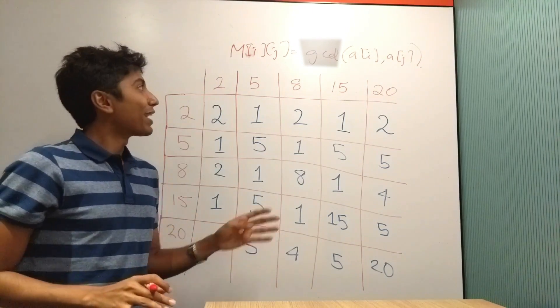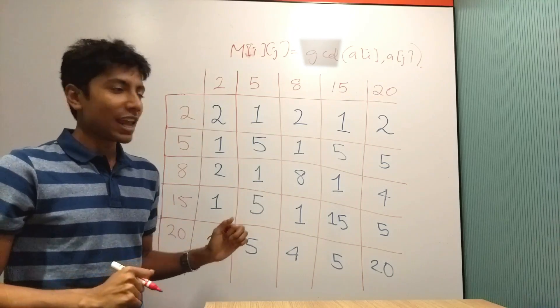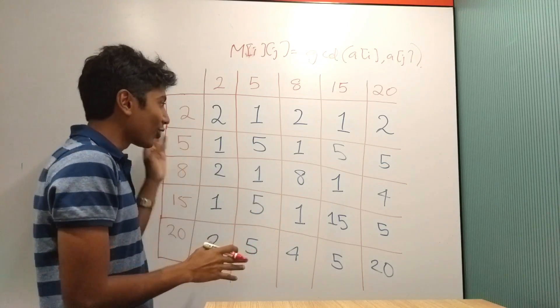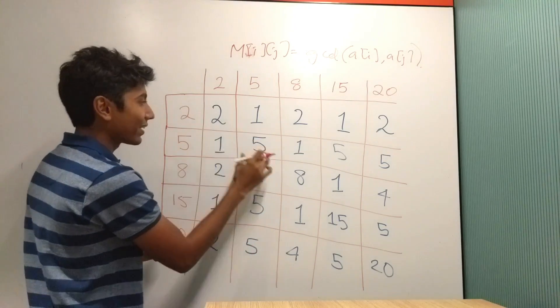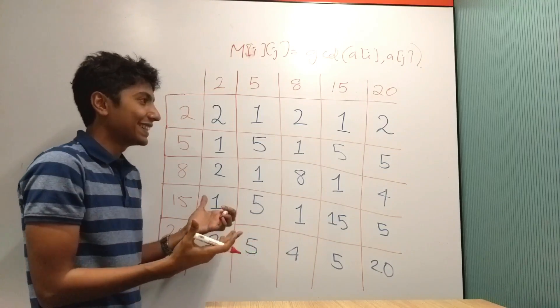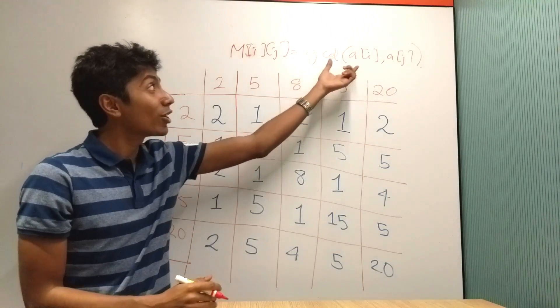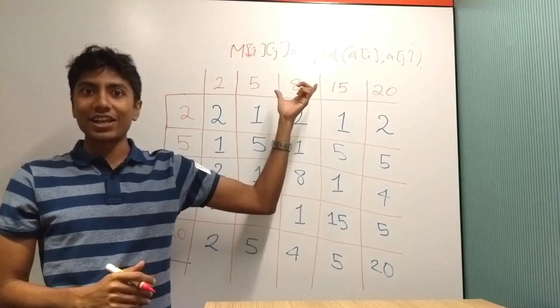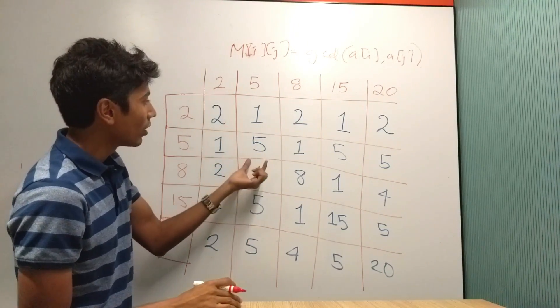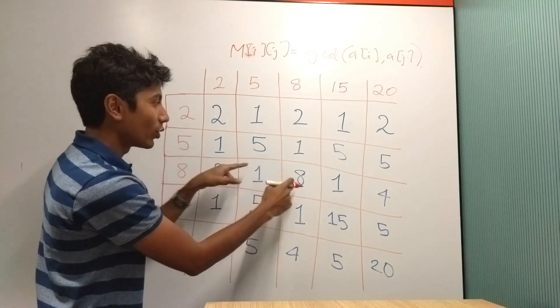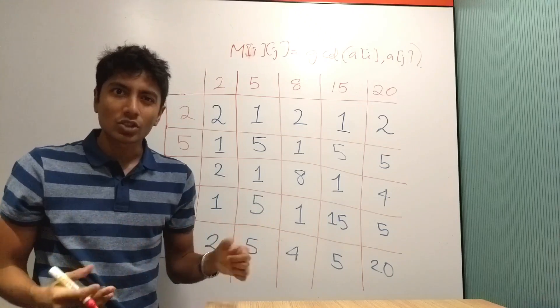But I noticed one thing. If I give him the matrix directly, he can find the original array just using the diagonal elements because that will be the GCD of the element with itself, which is the element itself. As you can see there's 2, 5, 8, 15, and 20. So that's the original array.